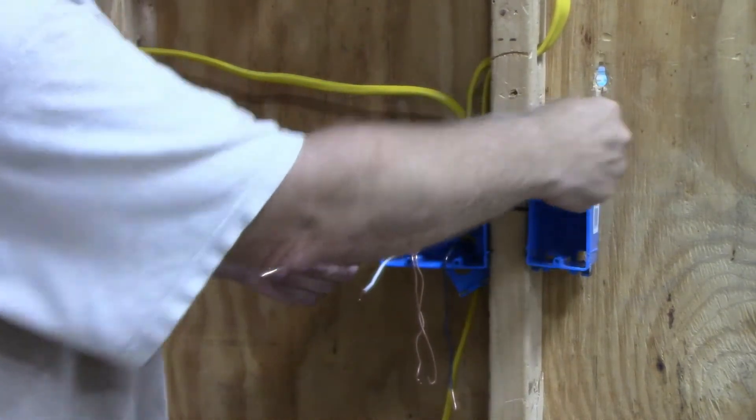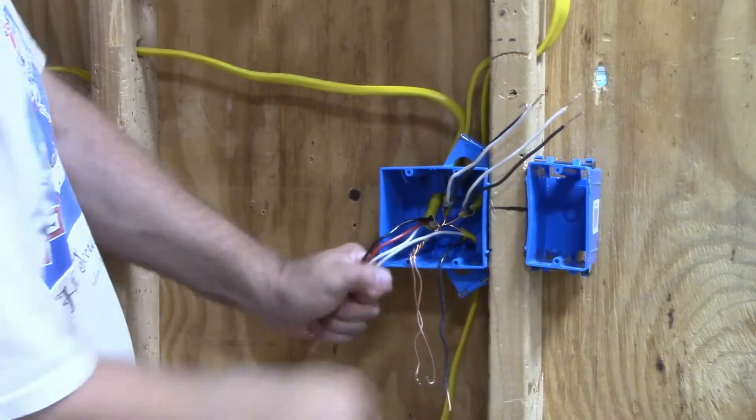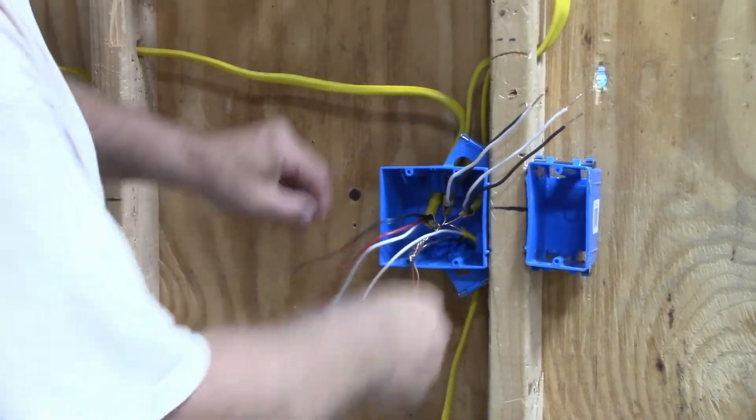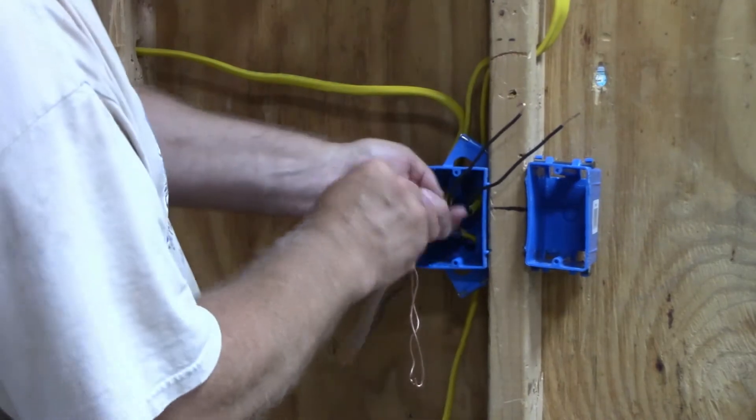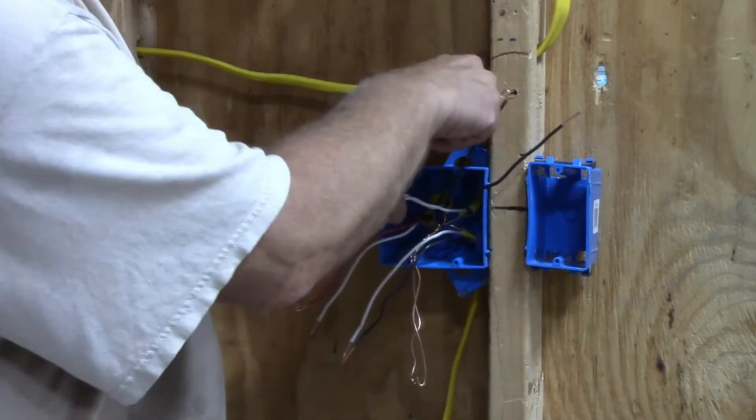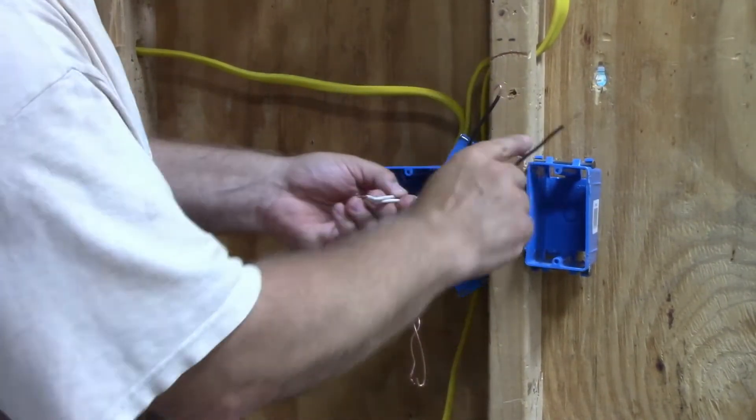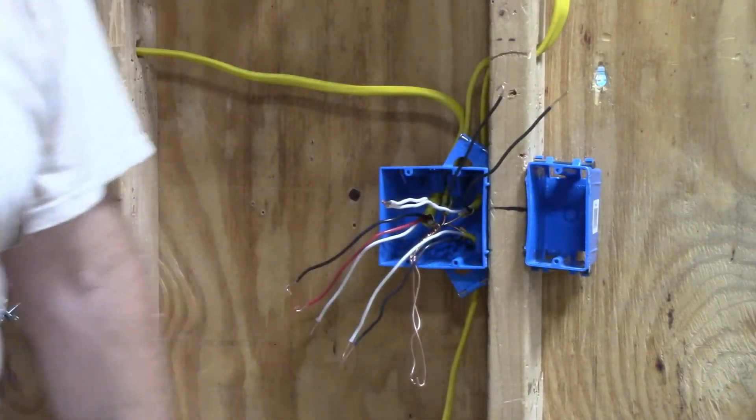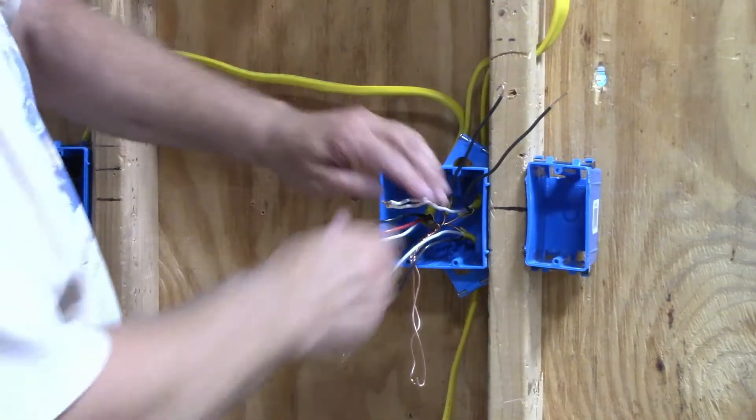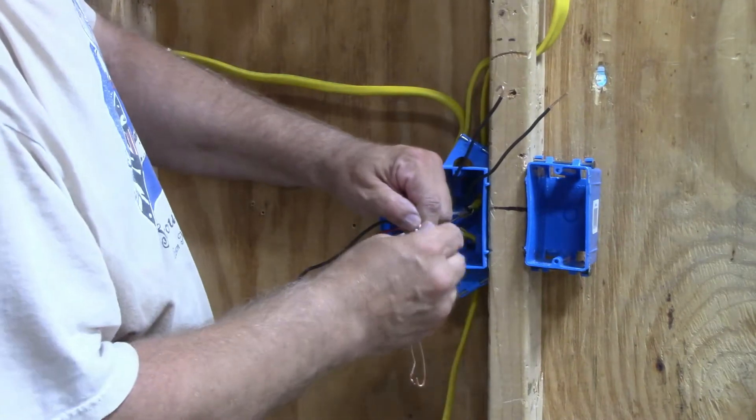This one and that one are going to go over there. These two are going to go over here. I'm going to take the neutral wire from the light and the neutral wire from the power, and I'm going to wire nut them together, separate from the other two.